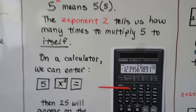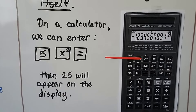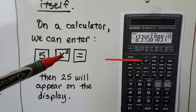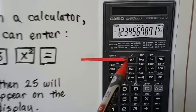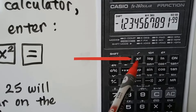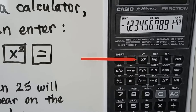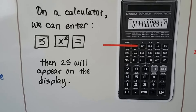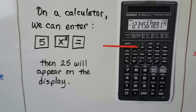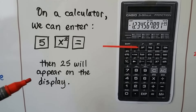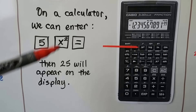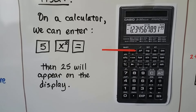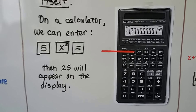If we want to do this on a calculator — the one they're going to lend you for the GED test — you put in the 5 and hit this x squared button. It looks like a script x with a little 2 exponent. You hit the equals sign, and 25 will appear on the display. So even if you have a really huge number and you need to square it, you can just put that number in, hit the x squared button, and equals, and you'll get the answer.